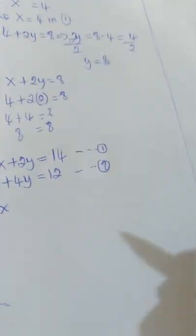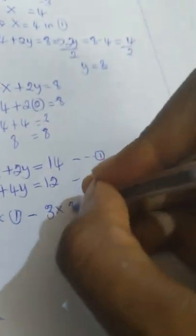We want to eliminate x. So if we take 1 and multiply equation one, minus 3 times equation two.